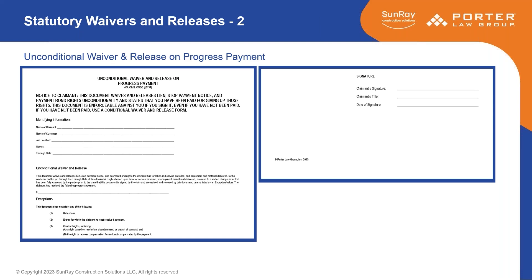Progress payments are those periodic payments on many contracts — usually larger contracts — that happen on a monthly basis or based on achieving certain benchmarks as you proceed. For example, when you have the foundation done you send one, when the walls are up you send one, when the roof is on you send one, or on a monthly basis, whatever the contract requires. Those are the two forms for progress payments.